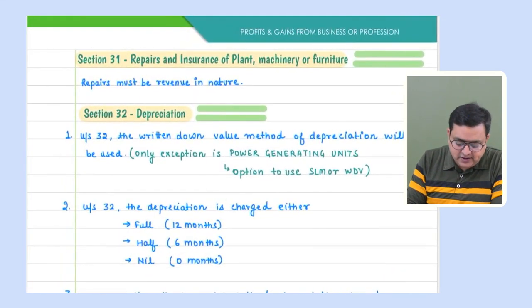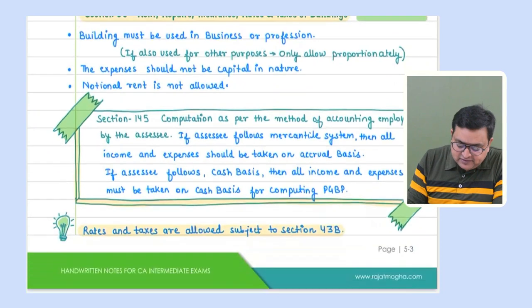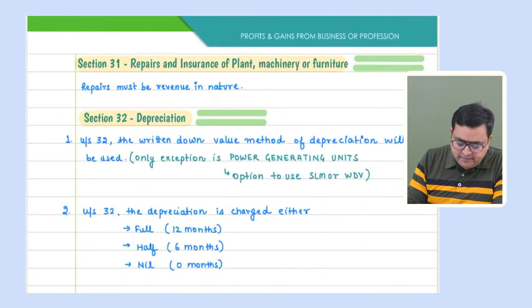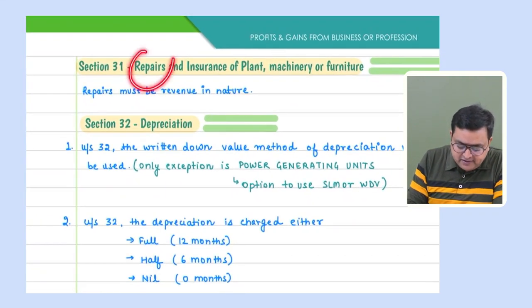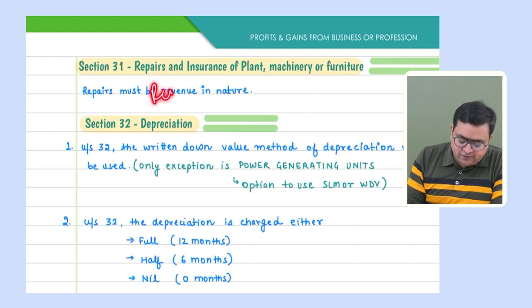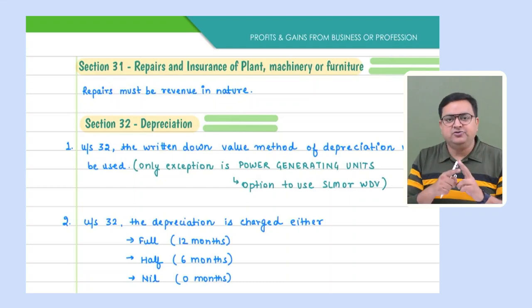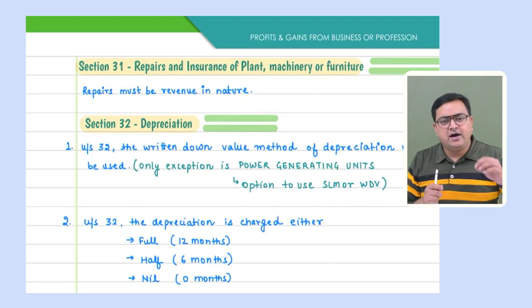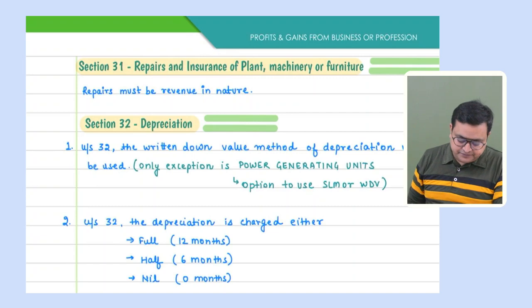Section 31 covers repairs and insurance of plant and machinery or furniture. Unlike section 30 which was for buildings, section 31 is for plant, machinery, and furniture. Only two types of expenses are covered: repairs and insurance. Rent of machine or furniture is allowed but under section 37, not section 31. Section 31 covers only repairs and insurance for plant, machinery, and furniture.